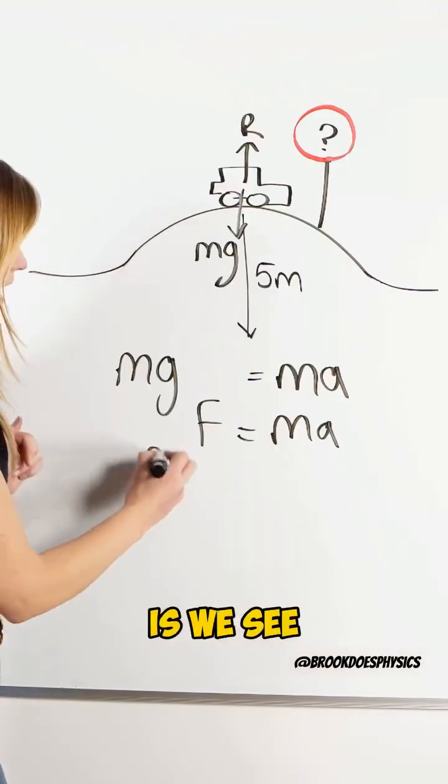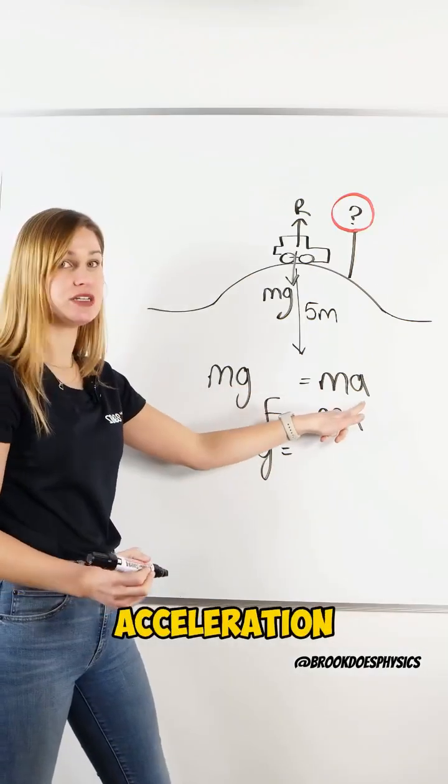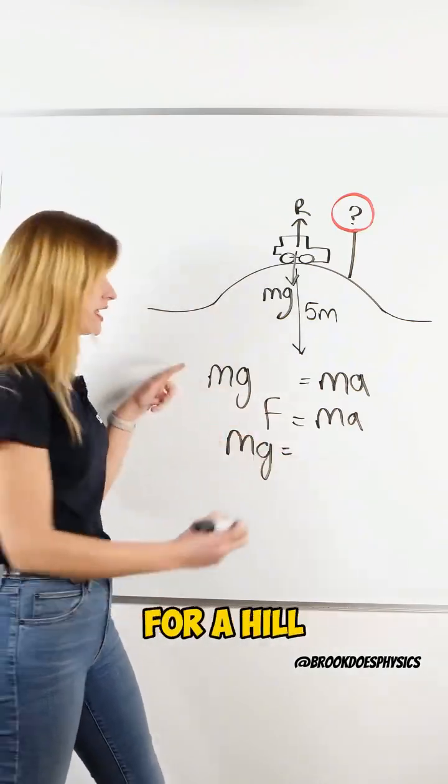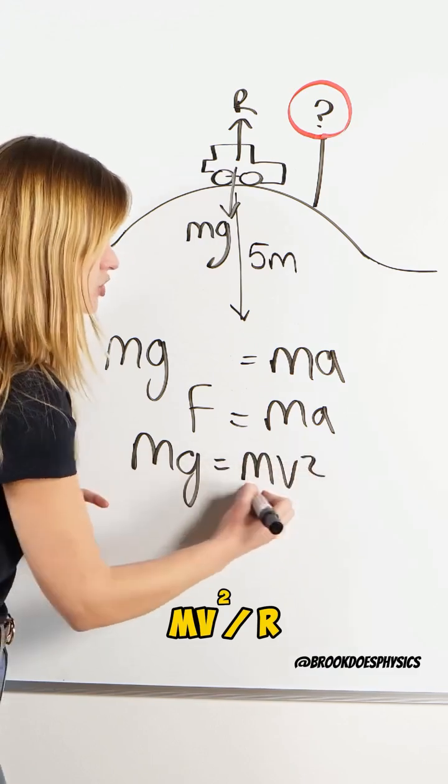So what we're going to do now is we see that mg is going to equal mass times acceleration. And for our circular motion for our hill, we use mv squared over r.